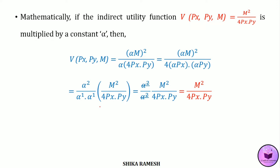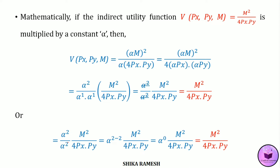This can also be solved another way. After getting alpha² divided by alpha² multiplied by m² divided by 4·px·py, we bring alpha² from the denominator to the numerator as alpha raised to minus 2. This gives alpha^(2−2) multiplied by m² divided by 4·px·py, which equals alpha⁰ multiplied by m² divided by 4·px·py — the Indirect Utility Function itself, confirming homogeneity of degree 0.